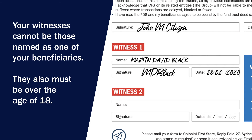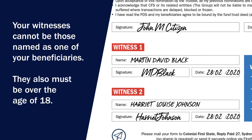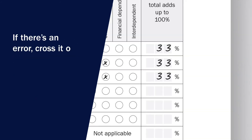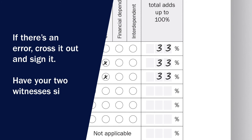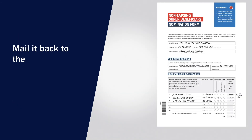Witnesses cannot be those named as one of your beneficiaries. They must provide their full name, including middle name if they have one, and be over the age of 18. Should you make an error, put a neat line through the error and rewrite the correct entry next to it. If you do this, both you and your two witnesses must initial next to each error correction.